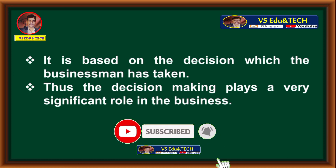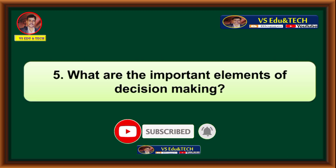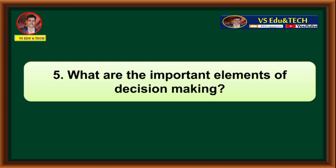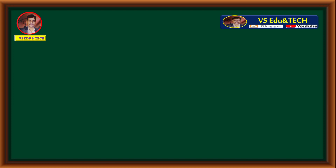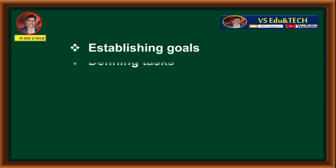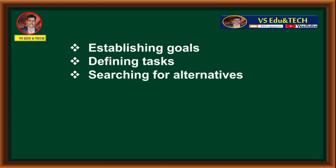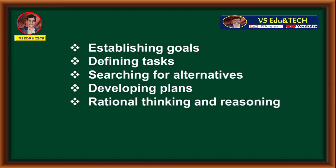Question number 5: What are the important elements of decision making? The important elements of decision making are: establishing goals, defining tasks, searching for alternatives, developing plans, rational thinking and reasoning, situation, and evaluation. These are all the important elements of decision making.